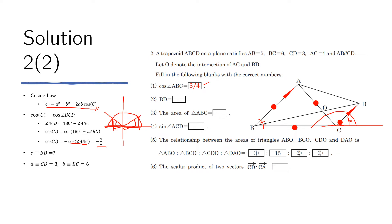Plugging in all the values, we get C squared. Taking the square root gives us BD equals 6√2.